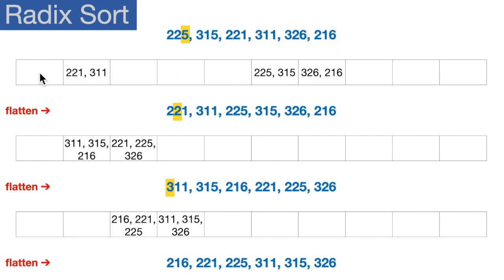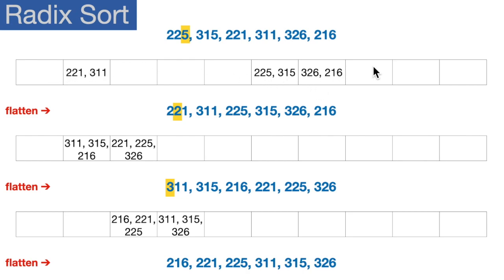The next step is to take this — it's essentially a list of lists, a two-dimensional list — and flatten it into a one-dimensional list, keeping items in the same order they're already in. So 221 is first, 311 is second, 225 is next, 315, 326, and then 216. All we did is flatten this list of lists into a one-dimensional list. This is the flattened result.